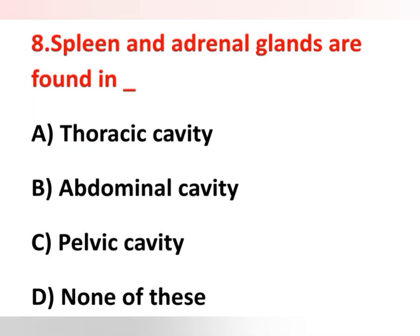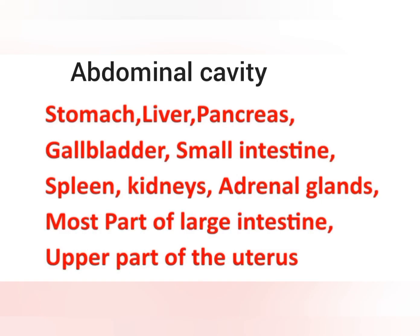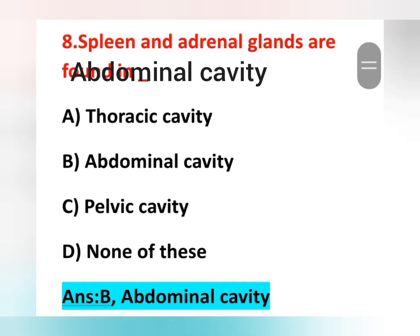Eighth question: spleen and adrenal glands are found in? Options are: option A, thoracic cavity; option B, abdominal cavity; option C, pelvic cavity; option D, none of these. The correct answer is option B, abdominal cavity. The abdominal cavity contains the stomach, liver, pancreas, gallbladder, small intestine, spleen, kidney, adrenal glands, most of the large intestine, and the upper part of the uterus.